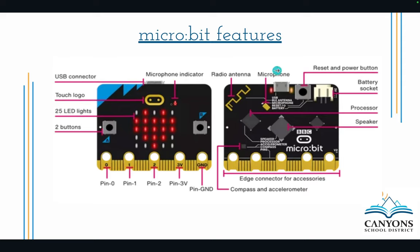There are lots of different features: a microphone that can take in input information, a battery connector, speakers if you want it to make sound, and even a compass. One of the biggest features that most kids use is the LED light display, and I'm going to show you a few examples of that in just a little bit, because that is one of the most basic features you can use.